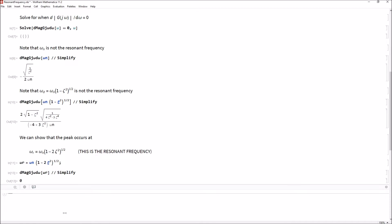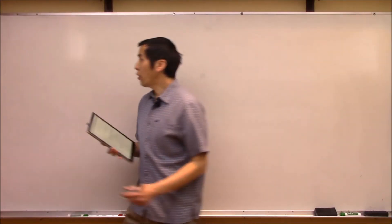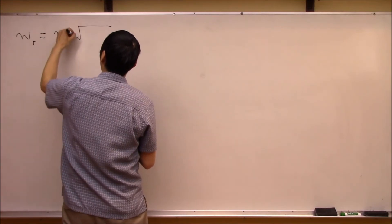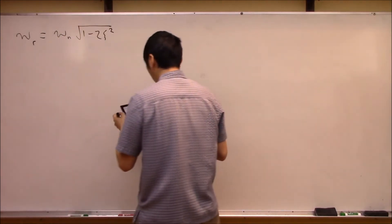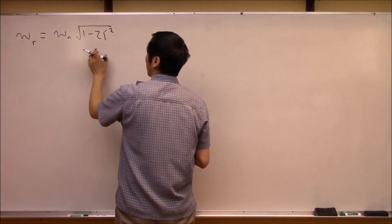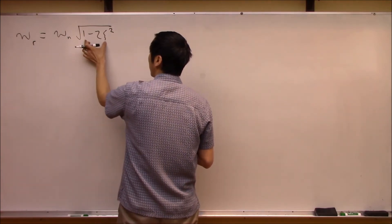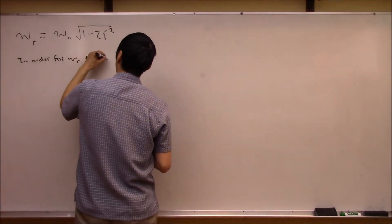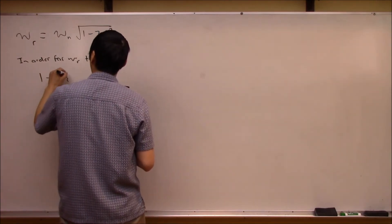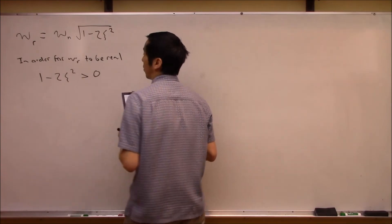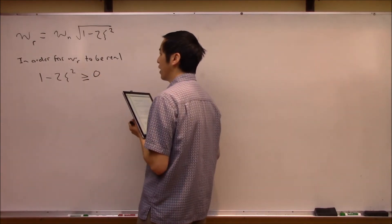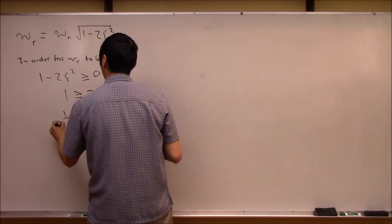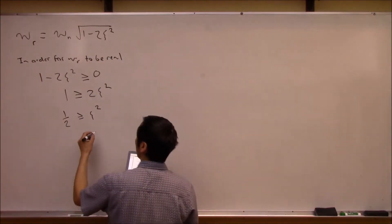Back on the board: the resonance frequency ω_R = ω_n·√(1 - 2ζ²). For ω_R to be real, the term (1 - 2ζ²) must be greater than or equal to zero, which means ζ² ≤ 1/2, or the damping ratio must be less than or equal to 1/√2.